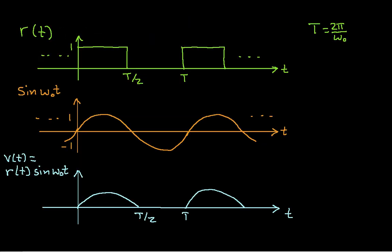Here's the strategy we're going to use. We'll build the rectified sine wave by starting with a square wave that has a duty cycle of one-half, and we'll multiply it by a sine wave that has the same fundamental frequency. That will give us just the positive parts of the sine wave. We know the Fourier series coefficients of the square wave and of the sine wave, and multiplying them lets us get the Fourier series coefficients of this product.